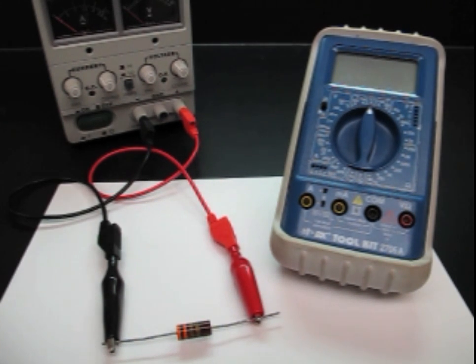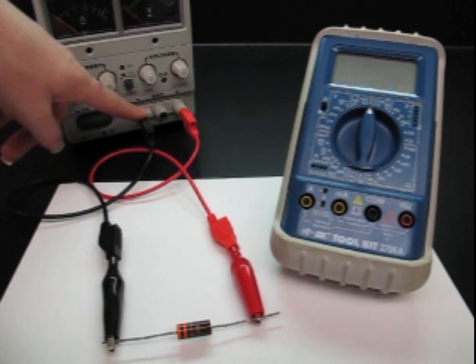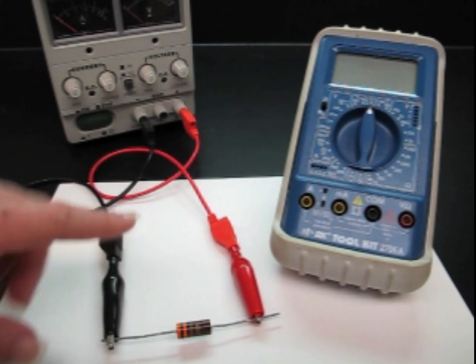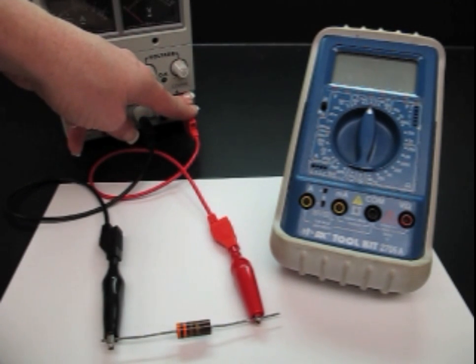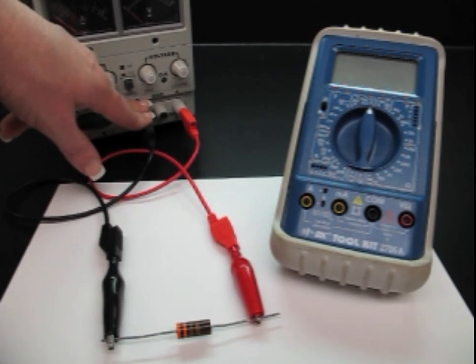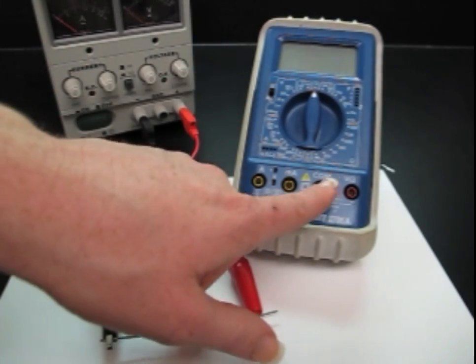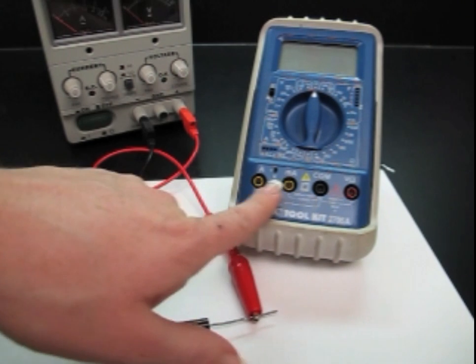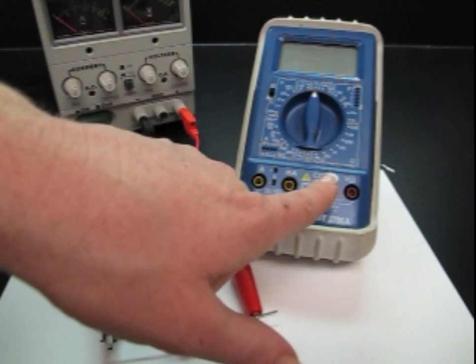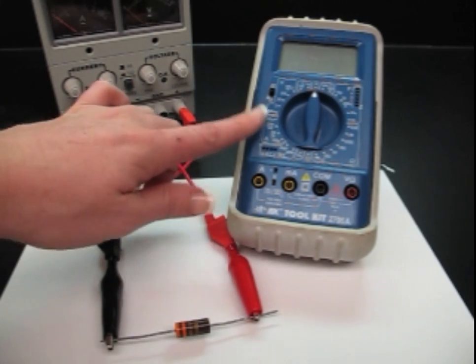So you're going to notice that on your power supply you'll see a red terminal and a black terminal and then I used a red wire and then a black wire to color code. Now in general electronics red is for positive and black is for negative or ground. And you'll see that on your multimeter that there is a black terminal, a red terminal and then two yellow terminals. For the multimeter black is your common port which will be plugged in for all of the other measurements that you take with the multimeter.